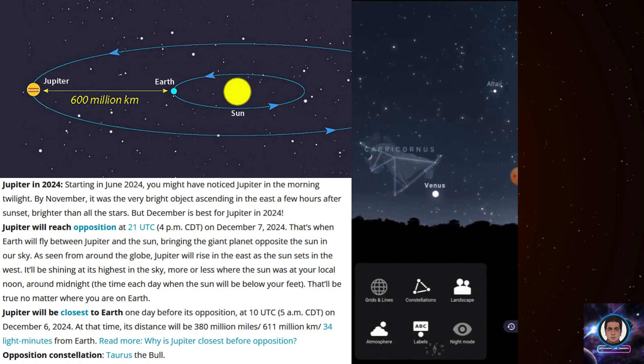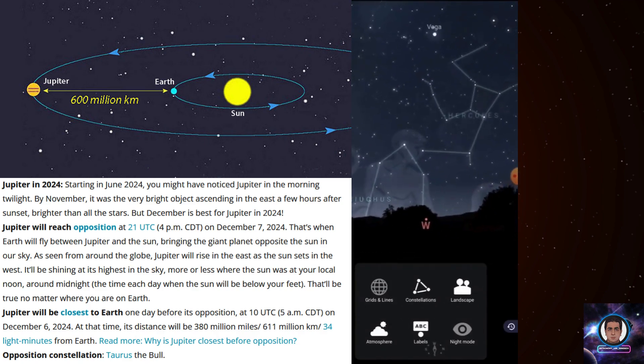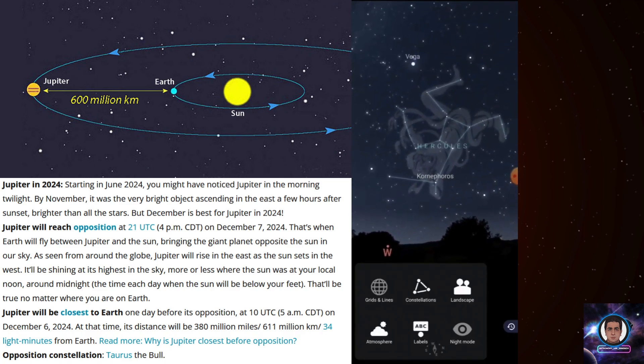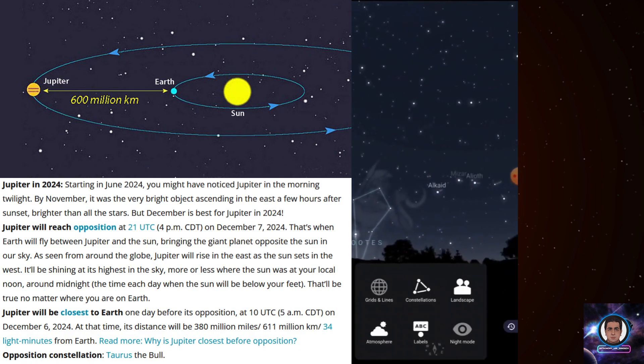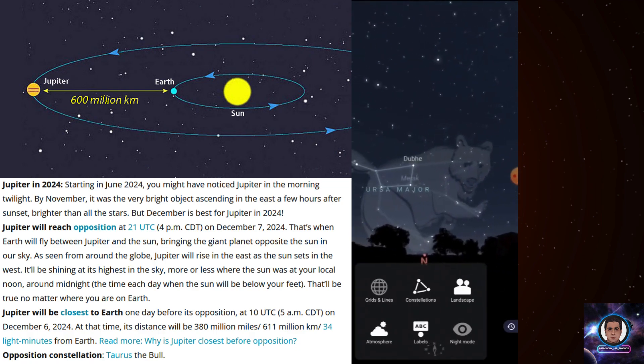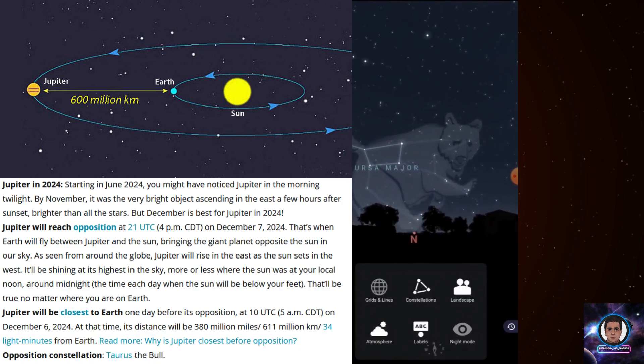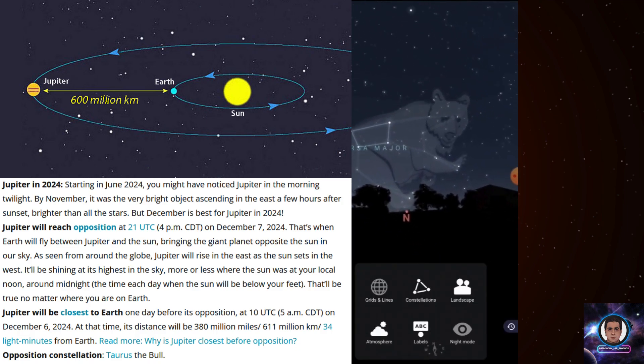I'm standing toward the south and I can see Saturn and the Moon and Venus, and to the west I can see Hercules constellation with Vega star, and if I go to the north I can see Ursa Major, which is one of the most popular constellations in the world.